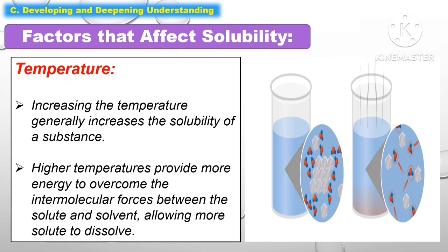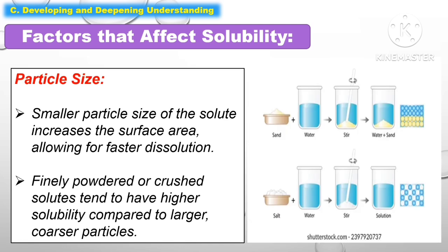The first factor is temperature. Increasing the temperature generally increases the solubility of a substance. Higher temperatures provide more energy to overcome the intermolecular forces between the solute and solvent, allowing more solute to dissolve. Another factor that affects solubility is particle size. A smaller particle size of a solute increases the surface area, allowing for faster dissolution.